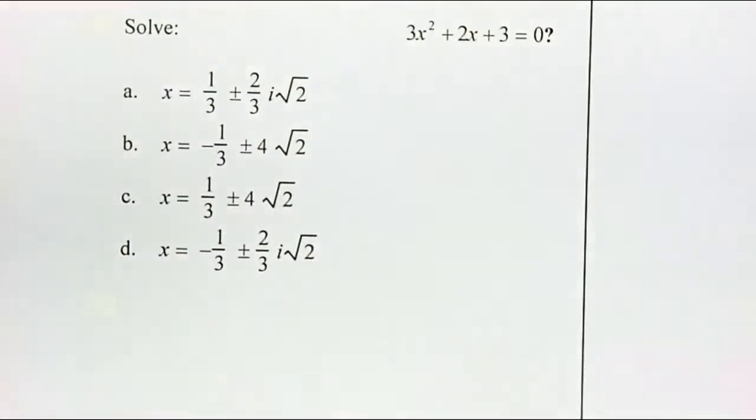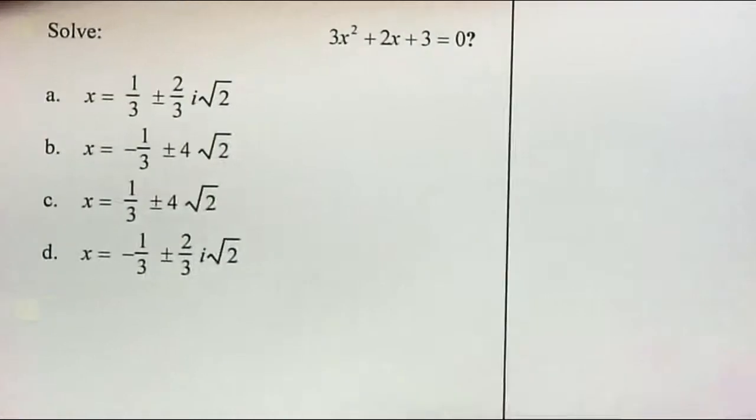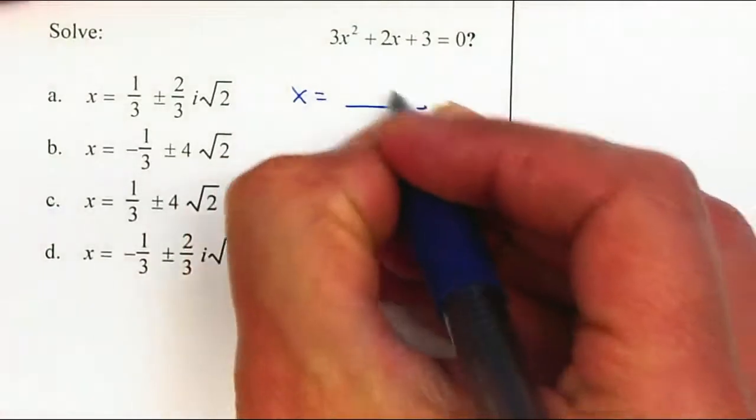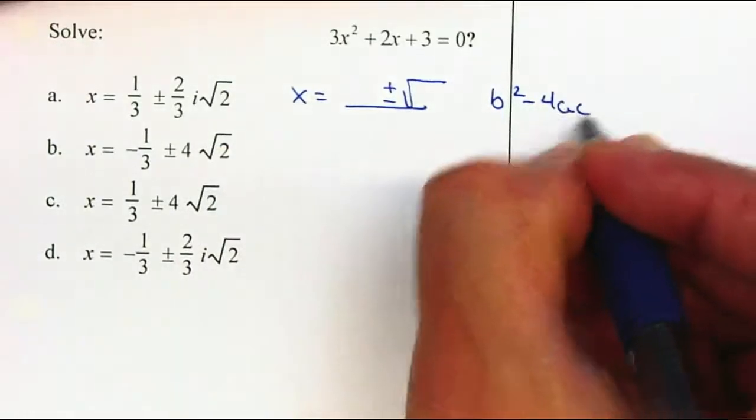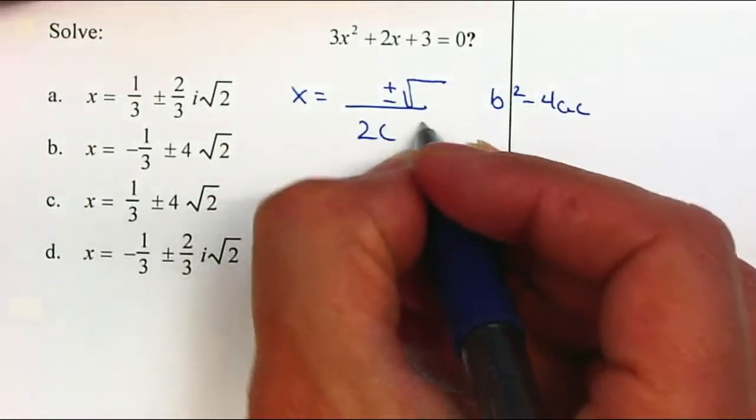So we are forced to use the quadratic formula. So let's go through the process. x equals opposite b, plus or minus square root of b squared minus 4ac, all over 2a. Perfect.